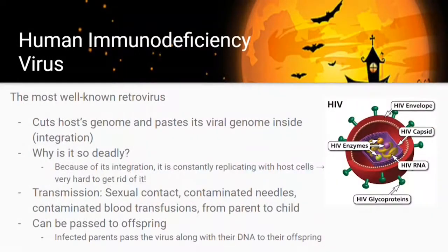HIV cuts your DNA and pastes itself in, and then it's in there permanently. Transmission occurs through sexual contact, contaminated needles, contaminated blood transfusions, and from parent to child. The HIV virus must insert itself into our genome in order to proliferate. Retroviruses have an RNA genome rather than a DNA genome. They use reverse transcriptase to convert their RNA genome back to DNA, and since the retrovirus is not a cell — just an envelope with RNA inside — it must hijack the machinery of other cells to replicate itself.